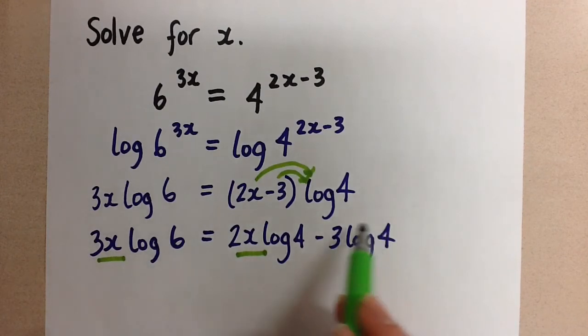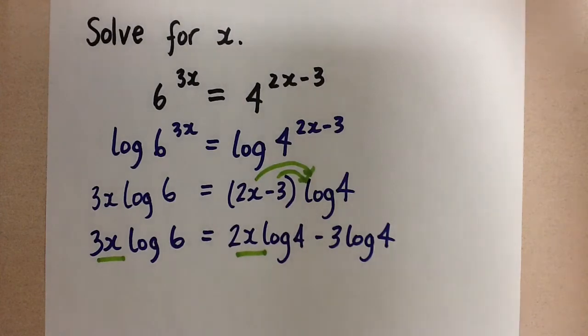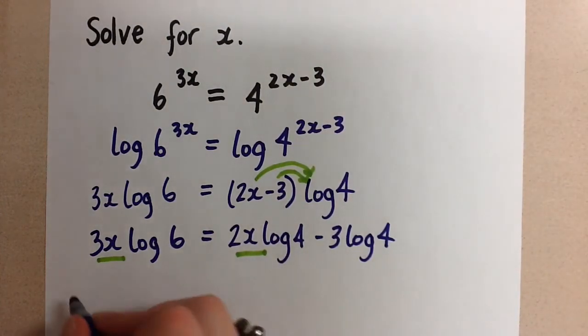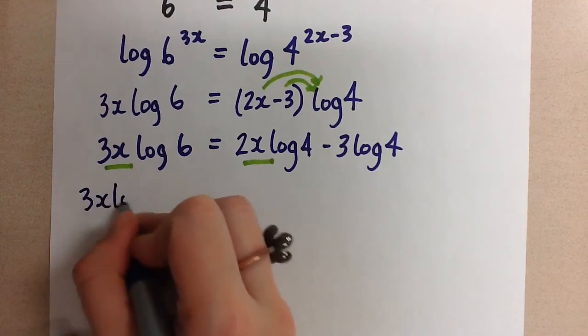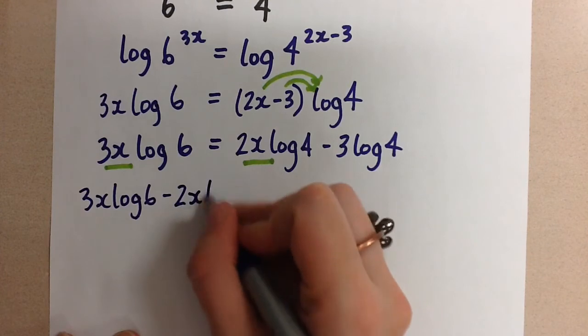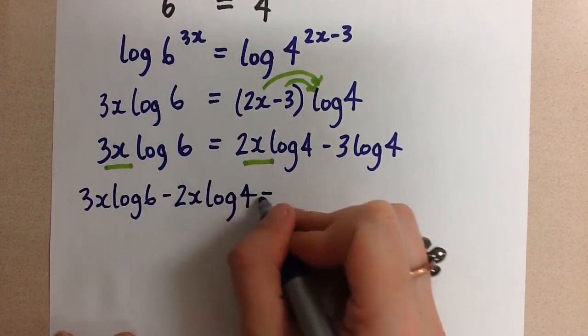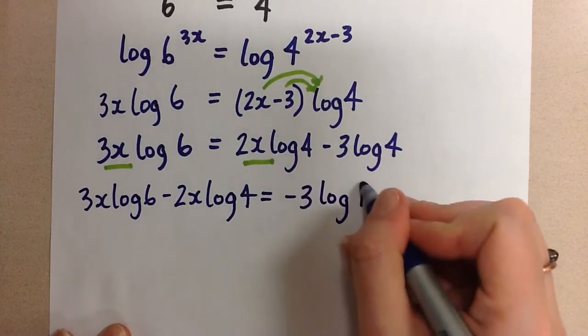And then we'll keep this constant here, this number minus 3 log 4, on the right-hand side. I'm going to bring over that 2x log 4 by subtracting it. And we have negative 3 log 4 left on the right-hand side.